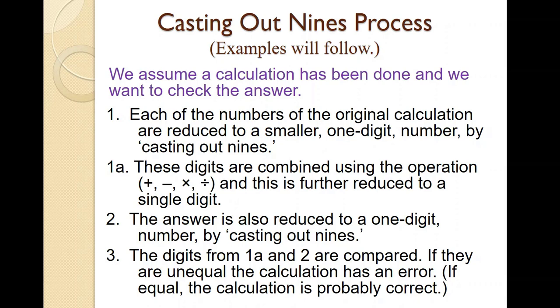Secondly, we take the answer from our calculation and cast out nines to get a single digit. Then we compare the digit from step 1a and the digit from step 2. And if they are equal, our calculation is correct, or at least probably correct. If they are unequal, we know that we have an error.